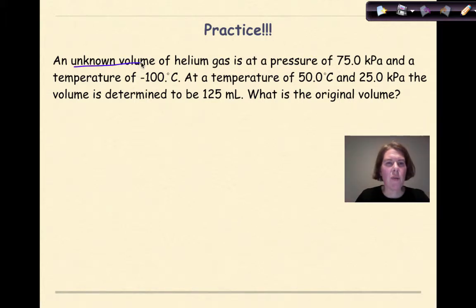An unknown volume of helium gas is at a pressure of 75 KPA and a temperature of negative 100 degrees Celsius. At a temperature of 50 degrees Celsius and 25 KPA, the volume is determined to be 125 milliliters. What is the original volume? So the first thing that we're going to do is list out our variables. P1, V1, T1, P2, V2, and T2.